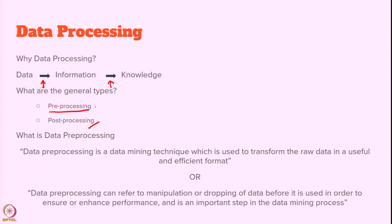All these steps come under data mining — data to information, information to knowledge. How the given raw data can be converted to useful data: this step is called pre-processing. Then we process the data and extract some information. From information we extract the knowledge. If we are not able to extract the knowledge directly, then we again process that data — that is called post-processing — and then we see what knowledge can be extracted. This entire set of information comes under data mining.